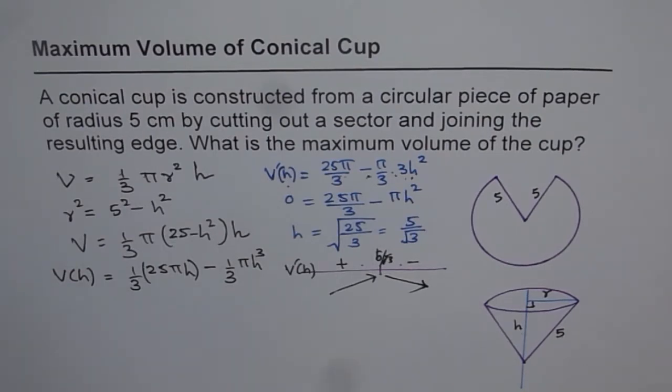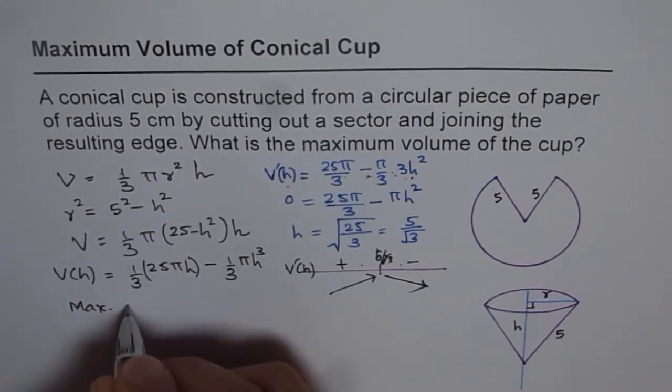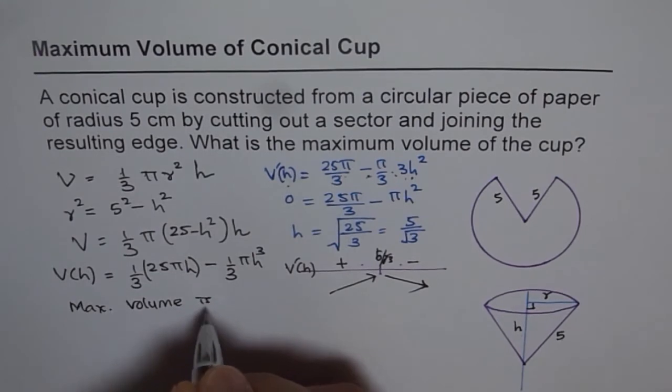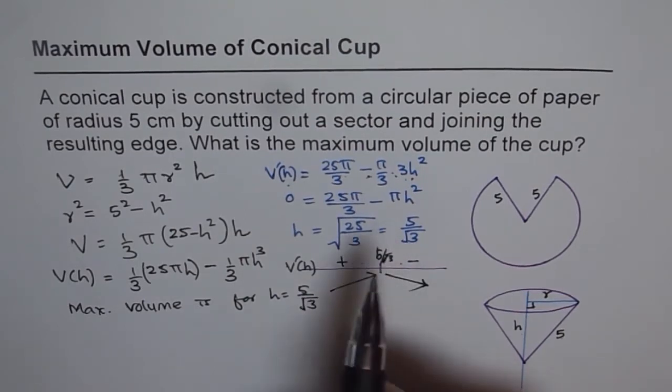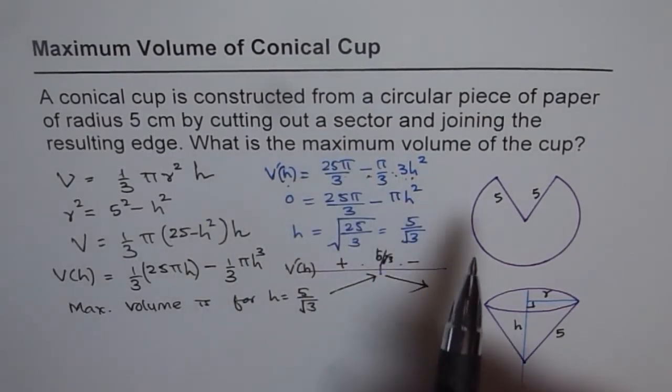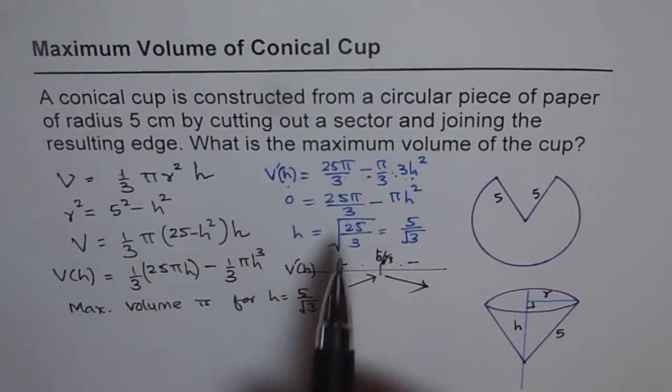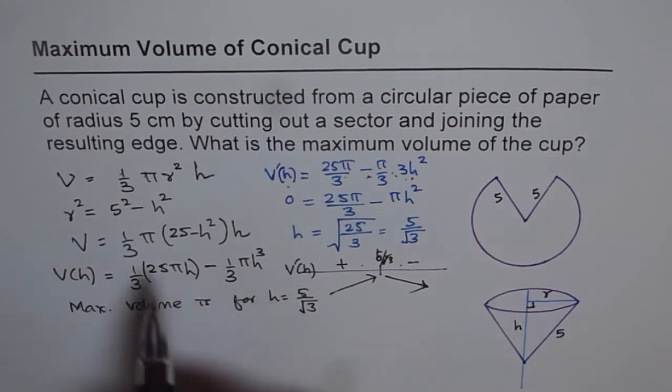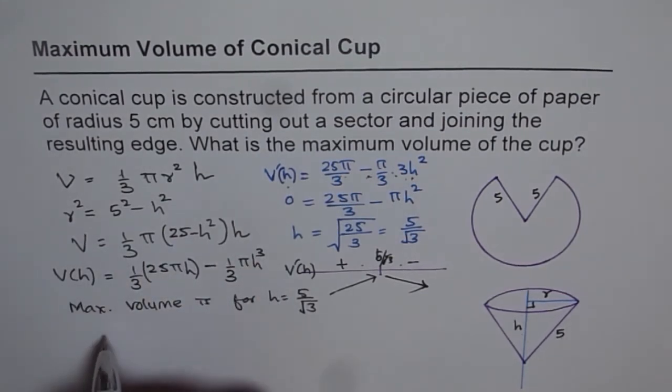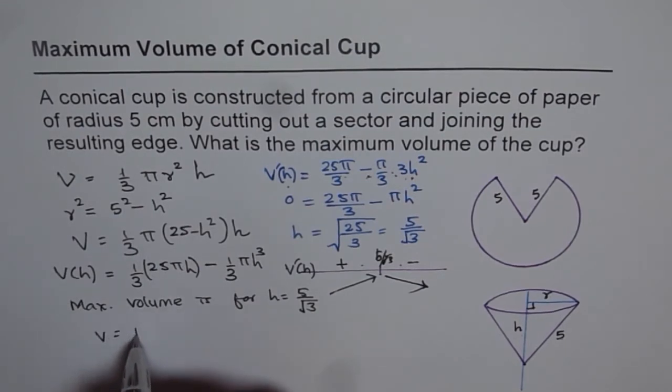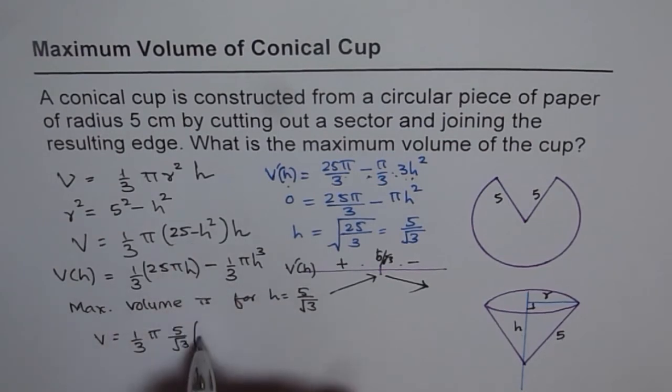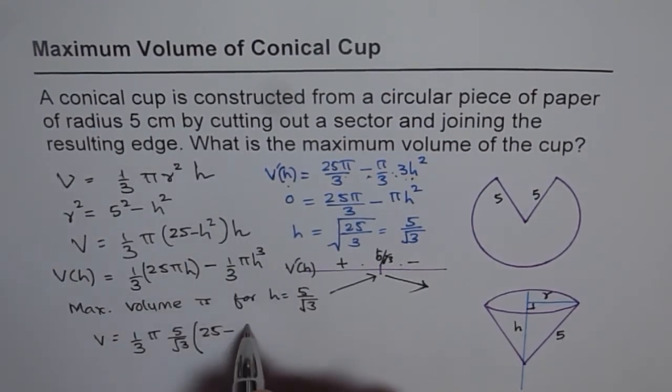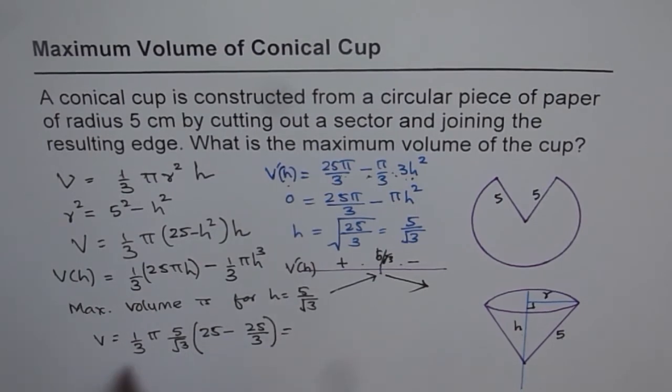So we find now that maximum volume is for h equals to 5 over square root of 3. Now the question is to find the maximum volume of the cup. So to find the maximum volume, we can either find radius from that equation or we can use this formula for volume and then find the value. So we will use the formula. So V equals to 1 by 3 pi times h, so pi times h value is 5 over square root 3, within bracket 25 minus h square, which is 25 over 3.